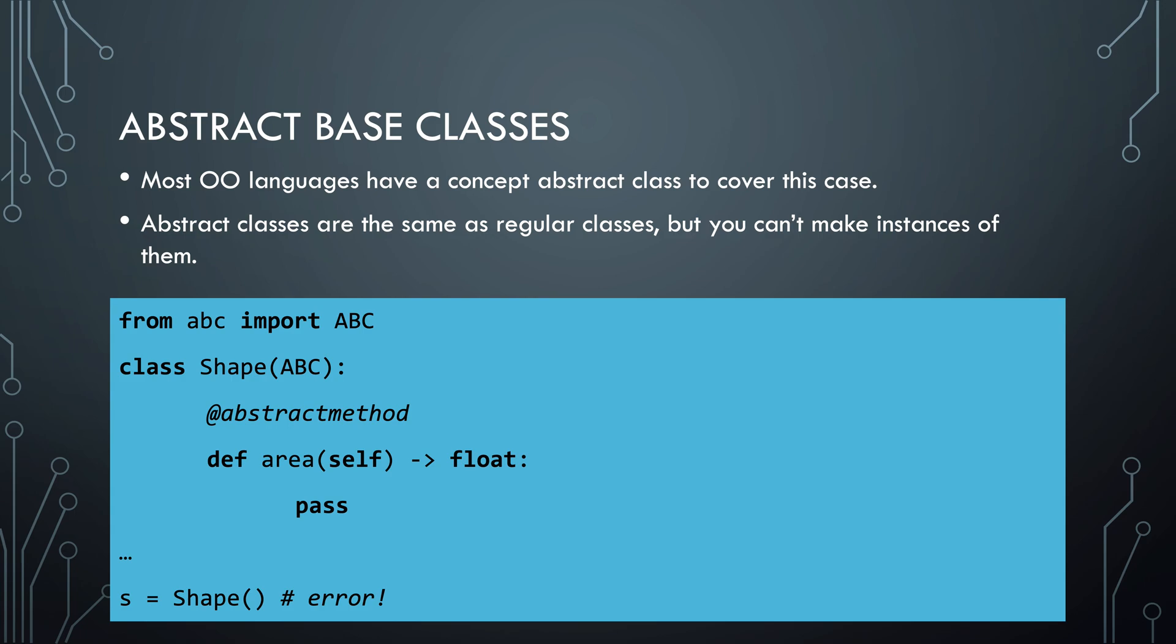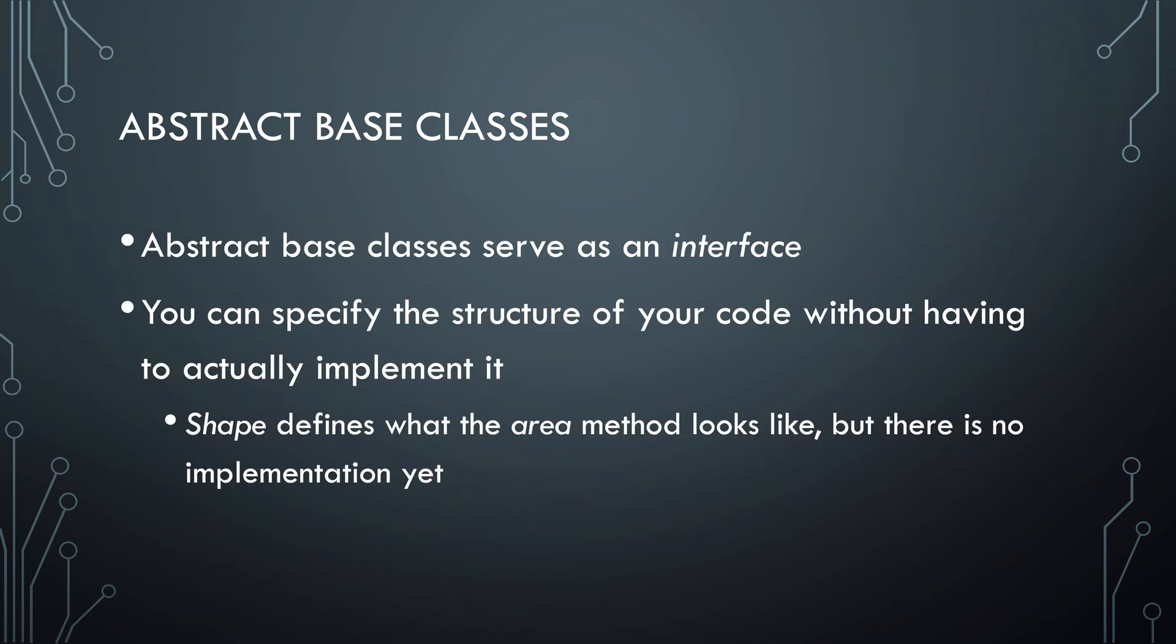So if you try to directly create an instance of this class, you get an error. Another thing is that there is a so-called decorator keyword abstract method above the area method. This means that if a class inherits from shape, such as a rectangle, it has to define an area method with this signature. Python will show you an error if you forget to do that. So in short, abstract base classes allow you to define an interface of what subclasses should look like. And that means you can use these abstract base classes to specify the global structure of your code without having to implement the details. It also means that your code will be easier to extend. The rules for shapes are clear. So it's pretty straightforward now to add other shape types, such as triangles. Shape defines what the area method should look like. So when you add a triangle shape, you know how to get started.